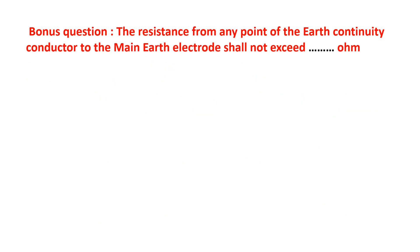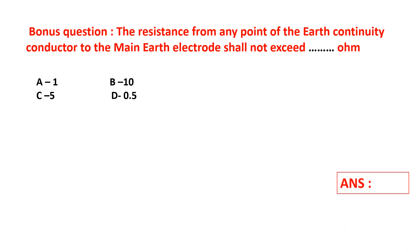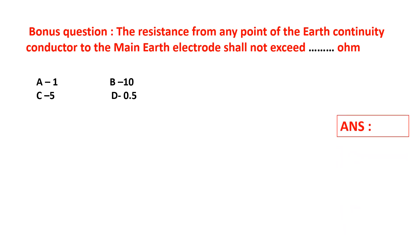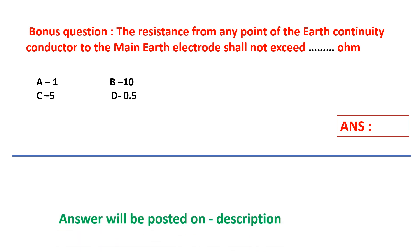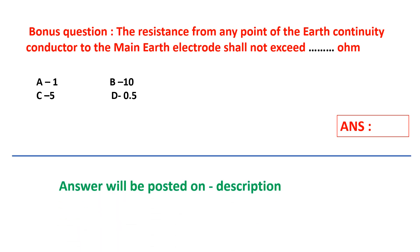Additional question: the resistance from any point of the earth continuity conductor to the main earth electrode shall not exceed dash ohms. Options: A) 1, B) 10, C) 5, D) 0.5. Select your answer.